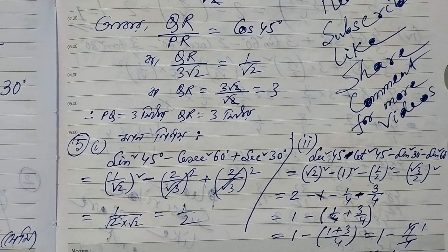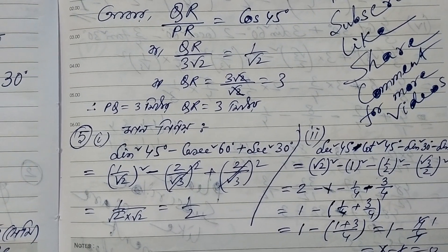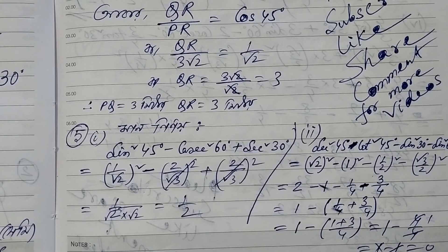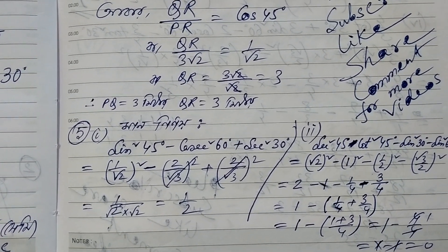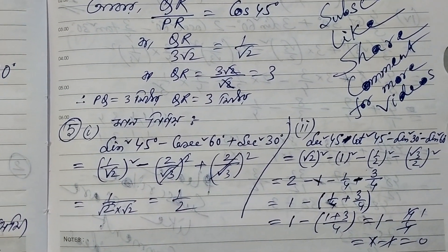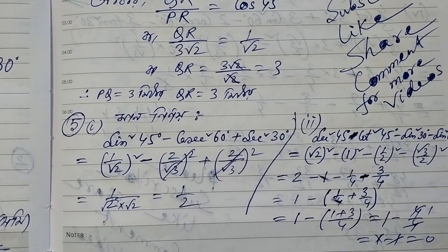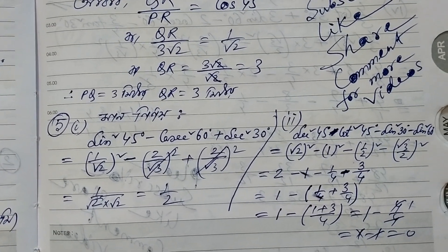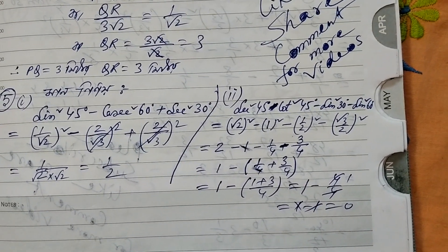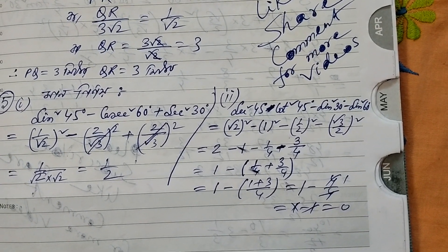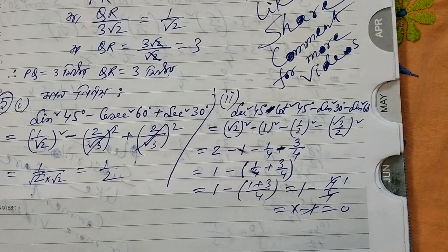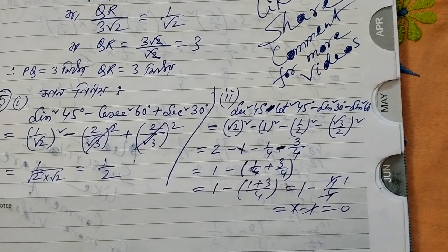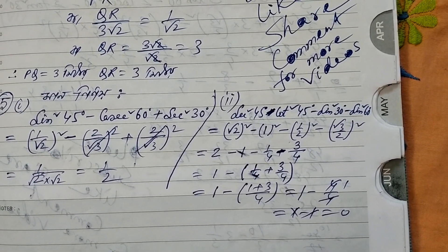Sin squared 45 degrees minus cosine squared 30 degrees. Sin squared 45 degrees means 1 by root 2, it is squared. Sin squared 45 degrees minus cos squared 30 degrees, minus 2 by root 3 squared plus 2 by root 3 squared. One by root 2 whole squared means 1 by root 2 into root 2, that is only half.